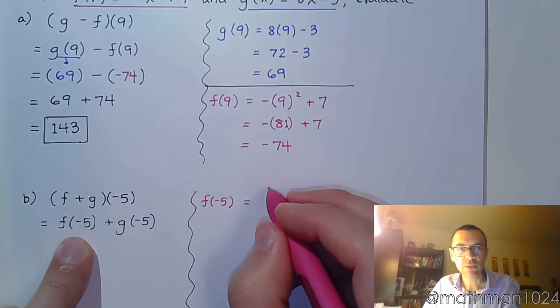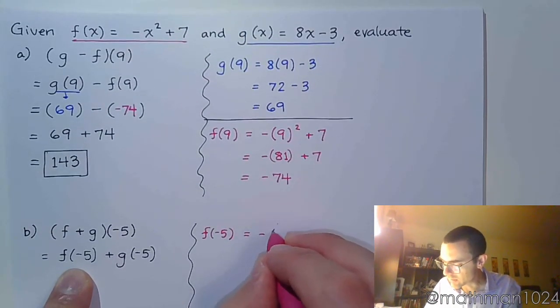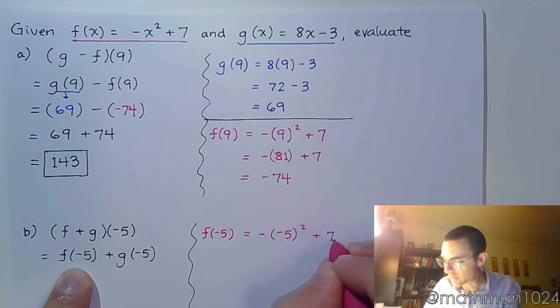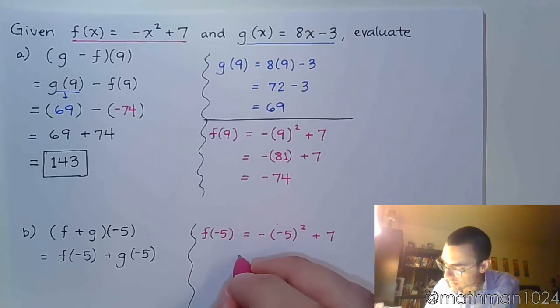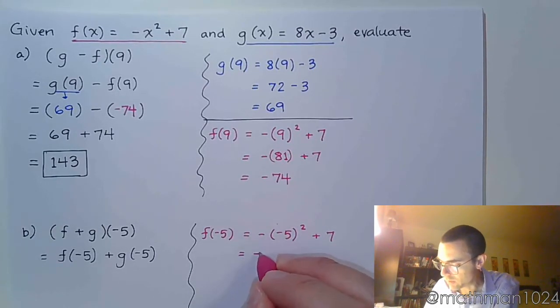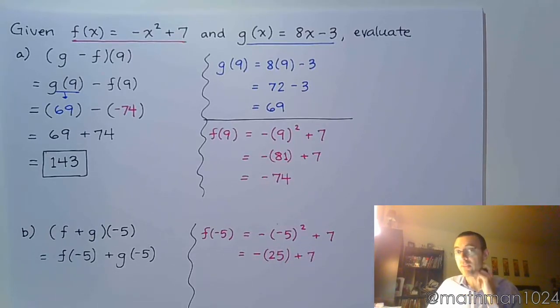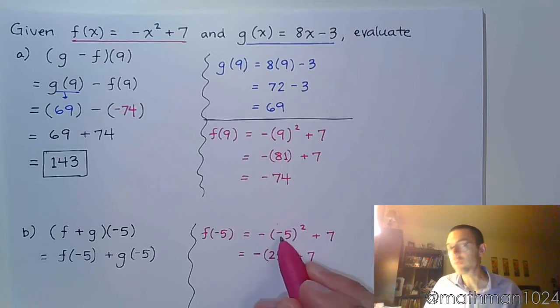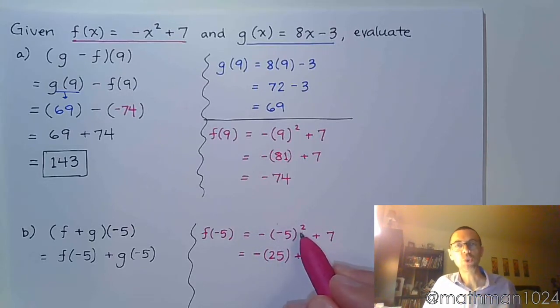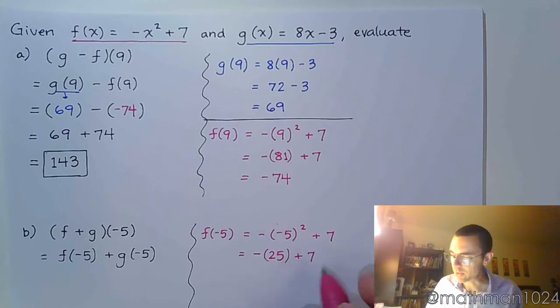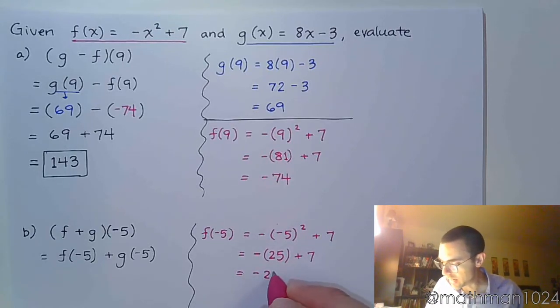So let's do f of negative 5 using the same functions that we had above. Negative x squared, so that's negative, replace the x with negative 5 squared plus 7. Be careful with your signs. You've got the negative here. When you square the negative 5, that becomes a positive 25. What you need to understand is that these two negatives don't see each other. This negative gets hit by the square first, and then you multiply times the negative. So you have negative 25 plus 7 is negative 18.